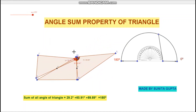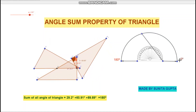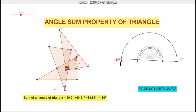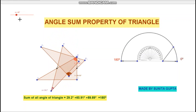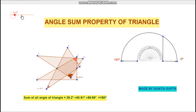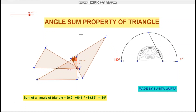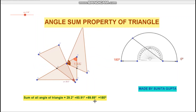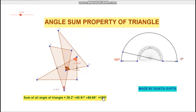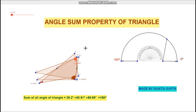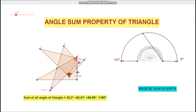These two animations have shown that the total angle is 180 degrees. We can arrange the triangle angles in linear pair form, and the total is also 180 degrees. Hence, the sum of all angles of a triangle is equal to 180 degrees — whether it is an acute angle triangle, a right angle triangle, or an obtuse angle triangle.